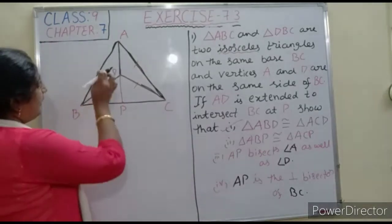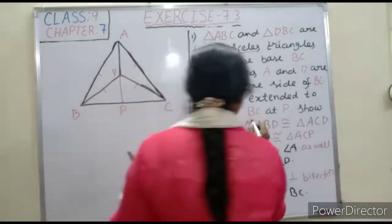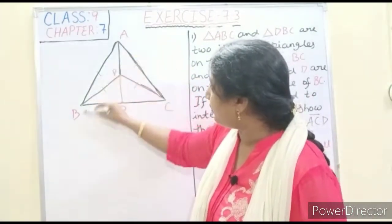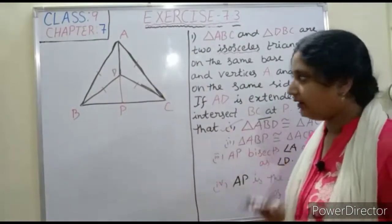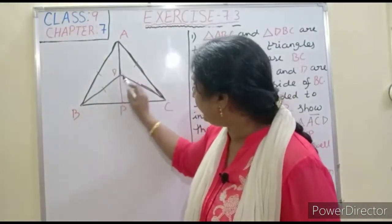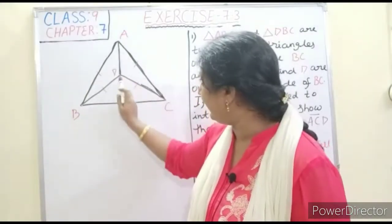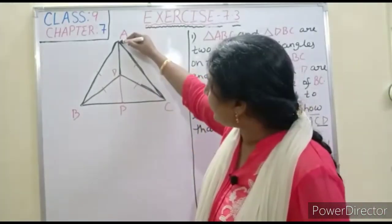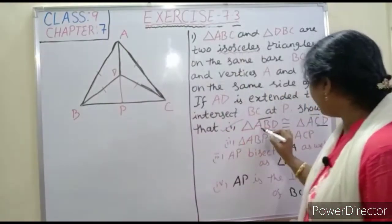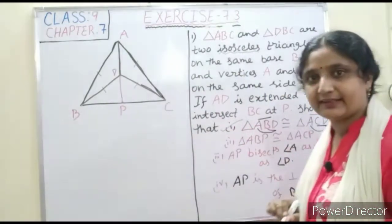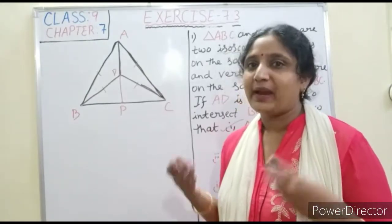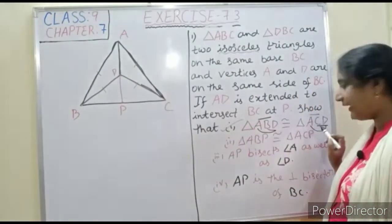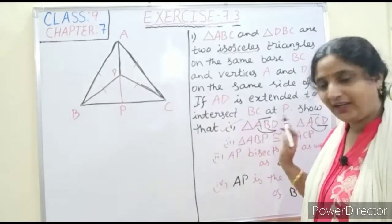Since triangle ABC is isosceles, AB equals AC. Triangle DBC is also isosceles, so BD equals CD. And AD is common. Since three corresponding sides of the two triangles are the same, by the SSS congruence rule, triangle ABD is congruent to triangle ACD. First part is over.